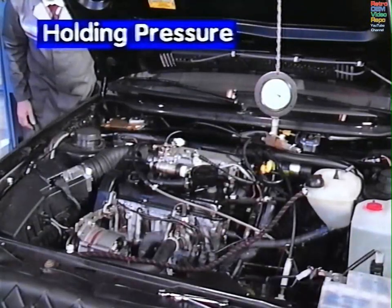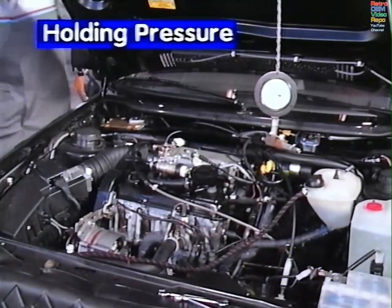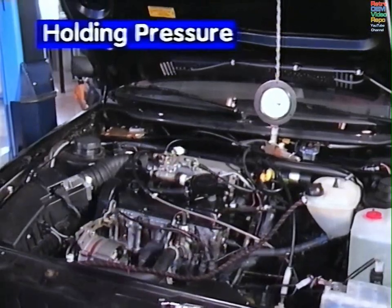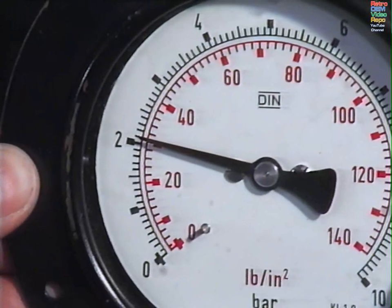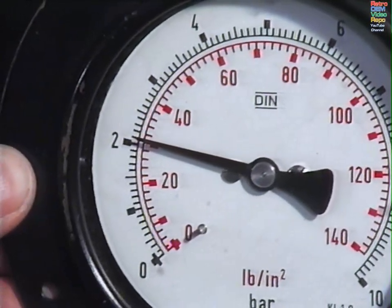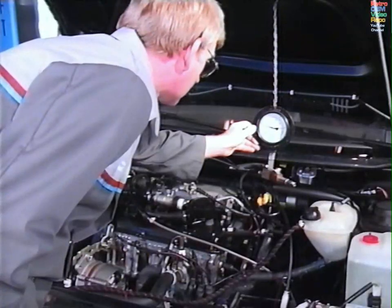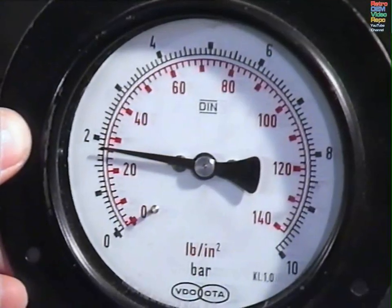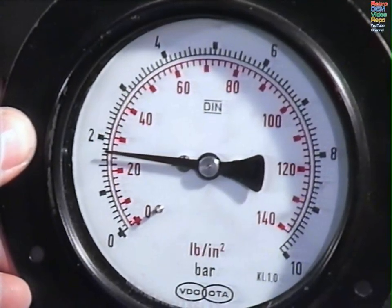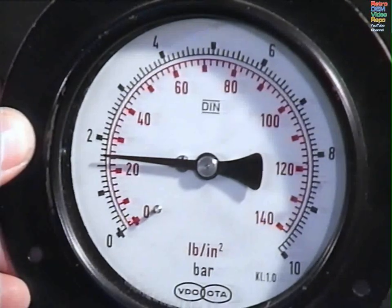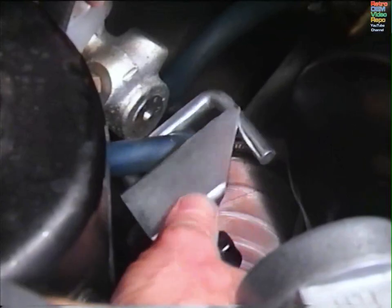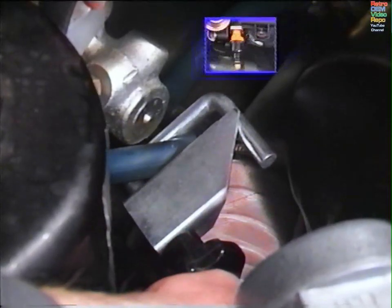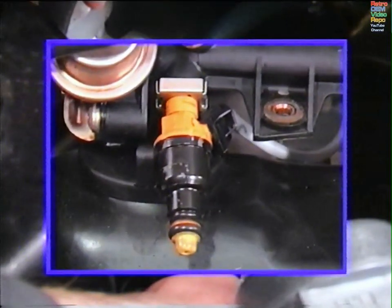Holding pressure. With the gauge still in position, switch the engine off. A residual pressure of about 2 bar should be maintained in the system for at least 10 minutes. Any reduction in pressure will indicate a leak of fuel either forward through the pressure regulator or back through the fuel pump. Clamping the blue return hose will indicate which area needs investigation. And don't forget that an injector leak can cause similar symptoms.